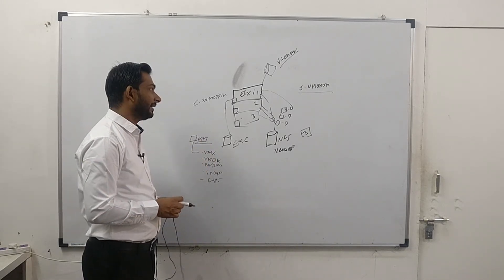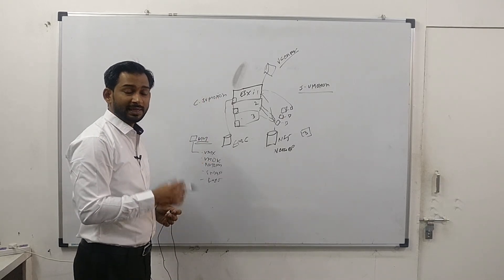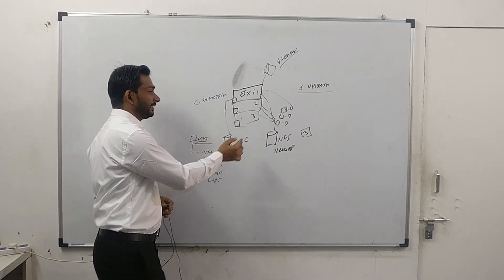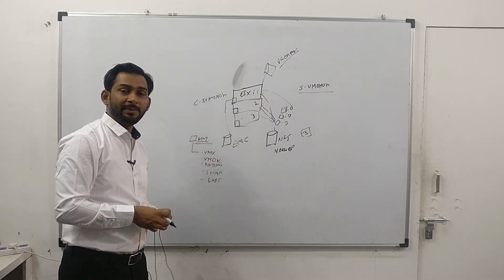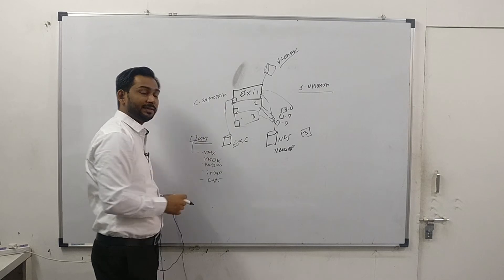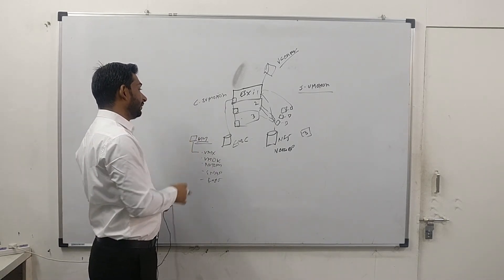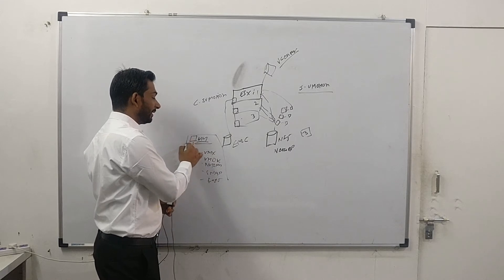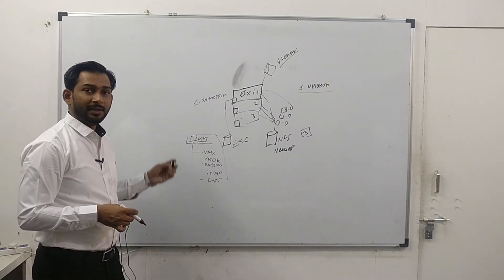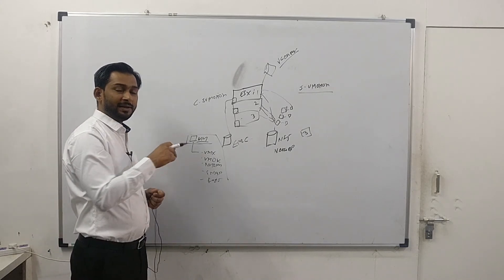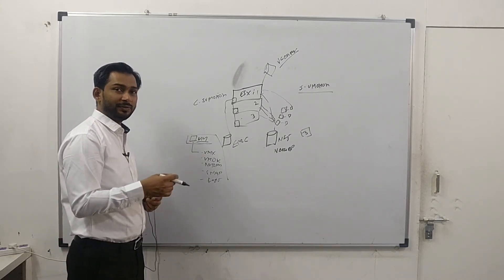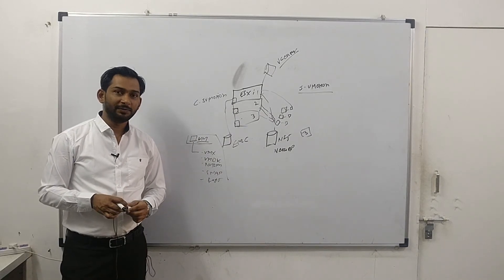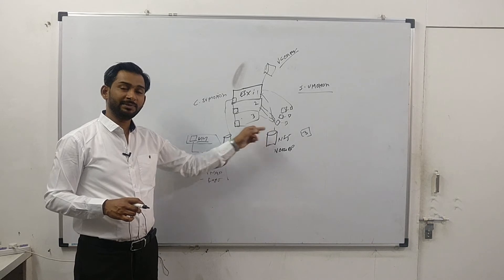If you want to migrate one virtual machine and you don't have a vCenter license and just have two ESXi hosts, there are two ways. If you are using shared storage, you can unregister the VMX from one ESXi host and register it on another ESXi host. Or, if you want to copy files from one storage to another, you open the Browse Storage option in ESXi, select the files, copy them, navigate to the destination datastore, and paste those files there.